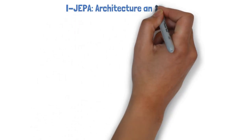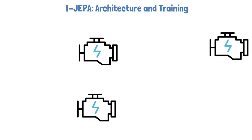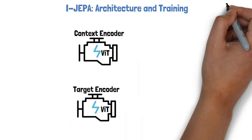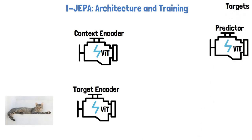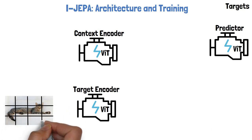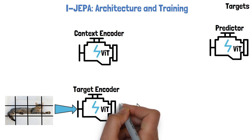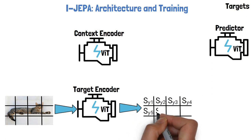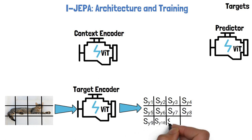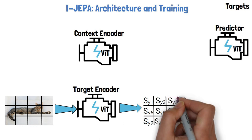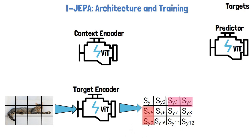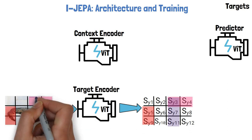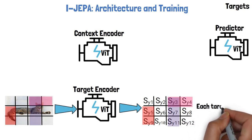iJEPA has three components: a context encoder, a target encoder, and a predictor — each a different visual transformer model. Given an input image of a cat, we convert it into a sequence of non-overlapping patches, then feed the sequence through the target encoder to obtain patch-level representations, marked as SY with the patch number. Blocks of patch-level representations with possible overlapping are then sampled to create target blocks for prediction and loss calculation. The targets are in representation space, so each target is obtained by masking the output of the target encoder.